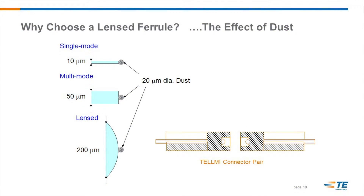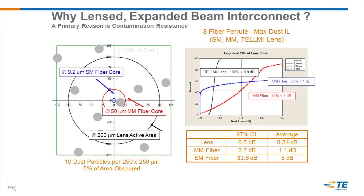Lens termini — what is it about lens termini that's important? Any time you have dust or debris, you risk blocking the photon. This slide shows that a 20-micron particle of dust is sufficient to fully block the light on a standard MT ferrule. When you put a lens on top of the photon, you have a 10x advantage. If you take a statistical distribution of dust particles in your application — which will happen — the chart shows that the drop in photon power is significant if you don't have a lens.